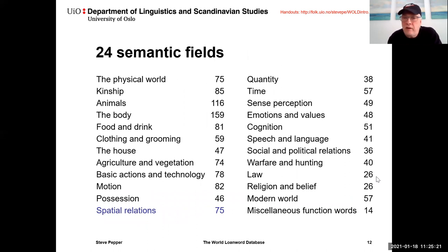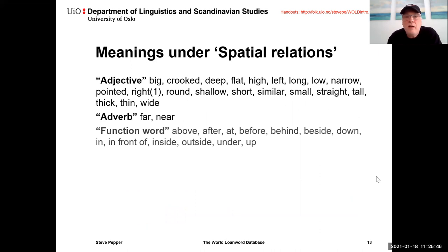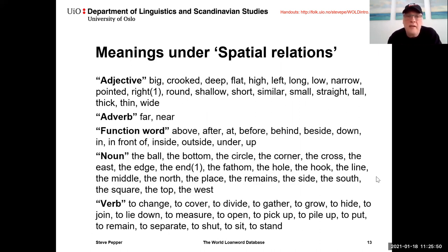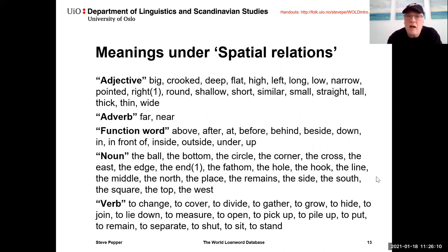The 24 semantic fields include the physical world, kinship, animals, etc., with the number of meanings in each shown alongside. Spatial relations, for example, consists of 75 different meanings distributed across the five semantic word classes. Under the adjective/property class you have meanings like big, crooked, deep, flat; nouns include the ball, the bottom, the circle; and verbs include to change, to cover, to divide. For each of these meanings, you have translation equivalents in each of the 41 languages, annotated both for analyzability and for loanword status.